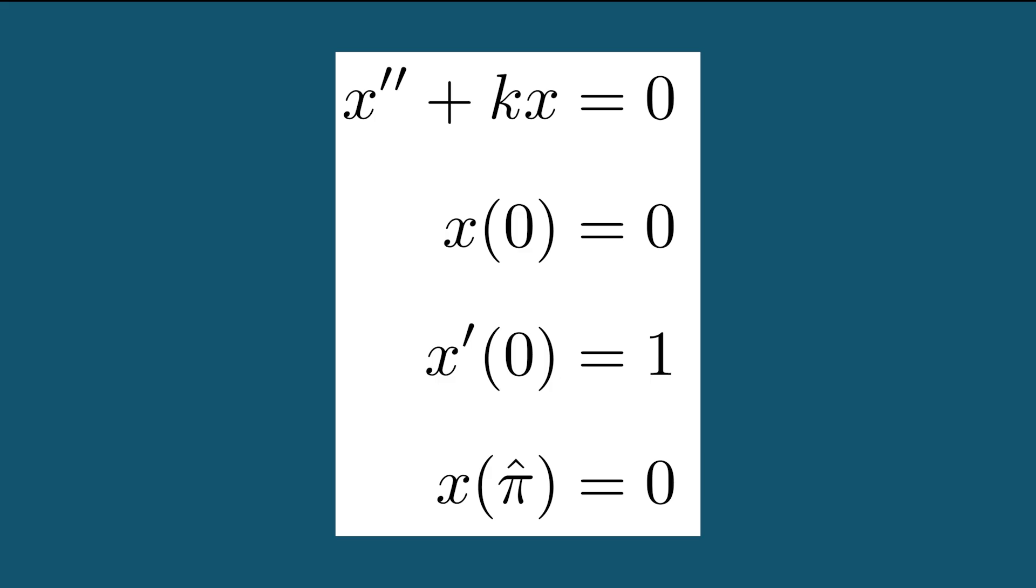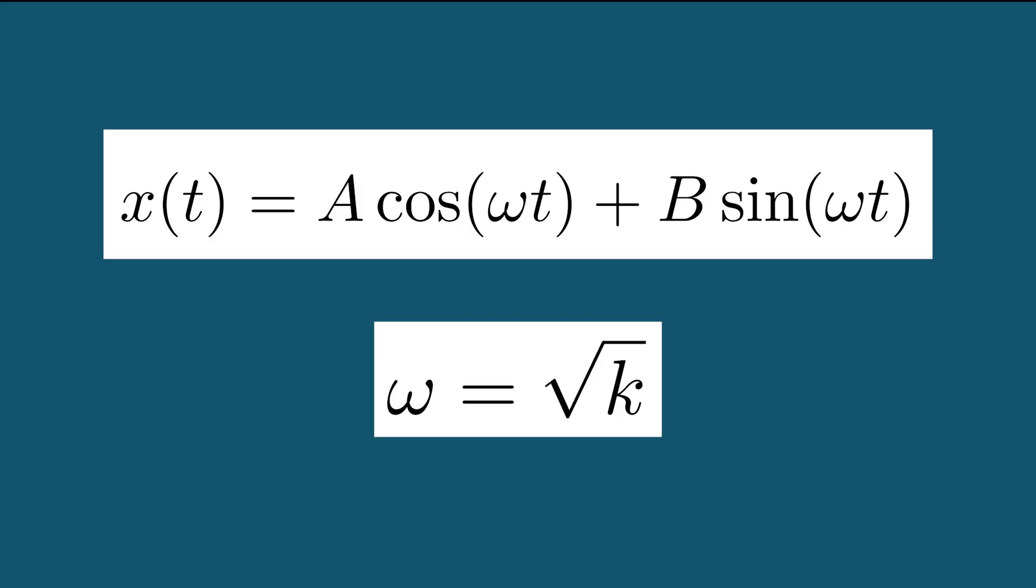Differential equations of this form are well studied, and we know that for k greater than zero, the solution must have the form x of t equal to a times cosine of omega t plus b times sine of omega t, where omega is equal to square root of k.